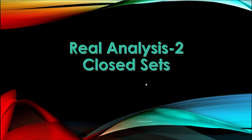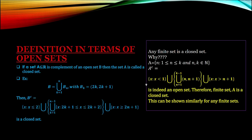We can define a closed set in terms of open sets or in terms of limit points. For the first definition, in terms of open sets: if a set A is the complement of an open set B, then the set A is called a closed set. We have provided one example where B is an open set and we have shown the B complement and how the closed set looks. You just take this definition as right and let's move on.